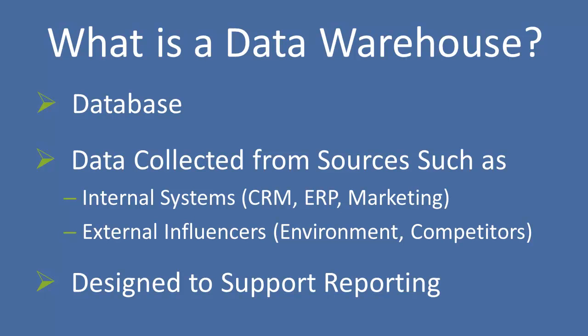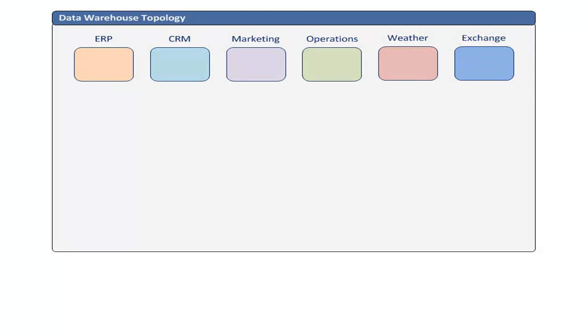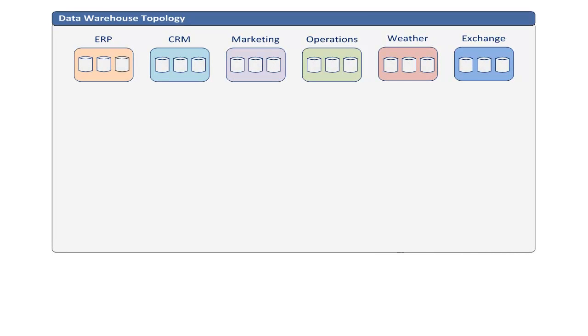If we're copying data from our source systems and placing it into our data warehouse, why are we going through all of this trouble? Why not just use the source systems? To answer that question, let's take a closer look at the data warehouse topology. Here we have six different boxes, each representing a different business function. Each of those functions more than likely has multiple source systems, which happens through natural growth of an organization or through mergers and acquisitions. But even if there were only one, two, or three source systems, there's still a very good case for creating a data warehouse.